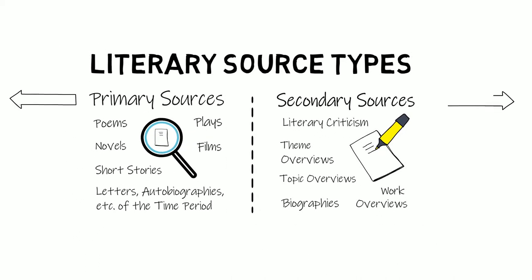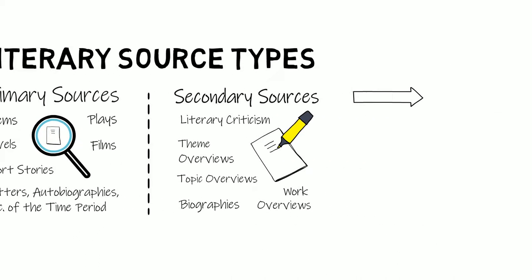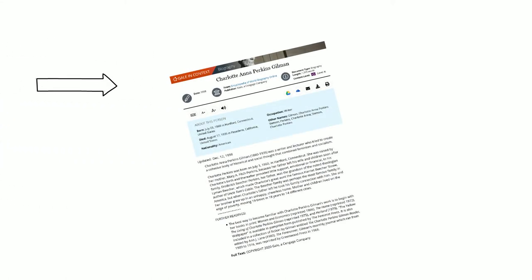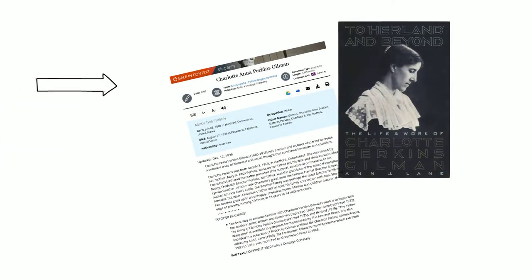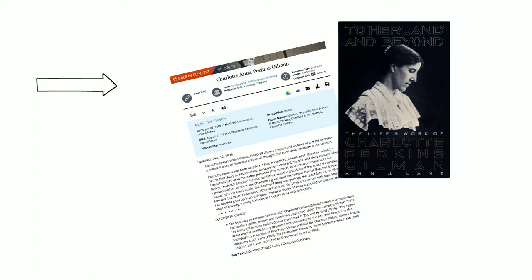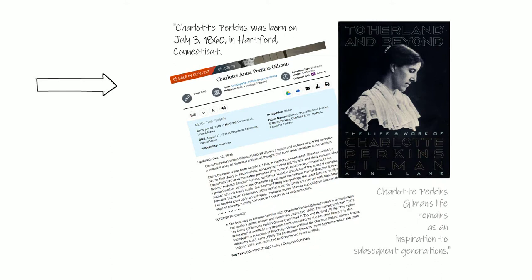Let's start with biographies. These are articles, book chapters, or books about the author and the author's life. They are secondary sources because someone writing a biography collects all the sources that give details from the author's life and summarizes them for you after the fact.